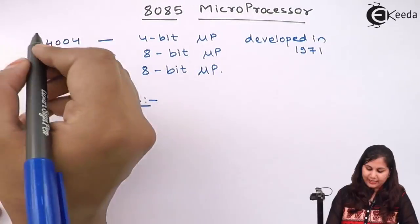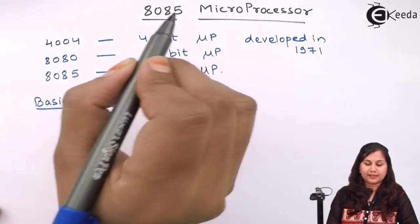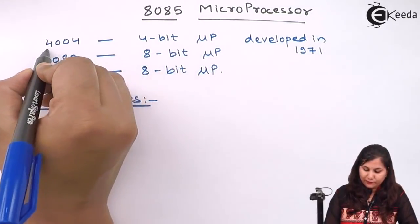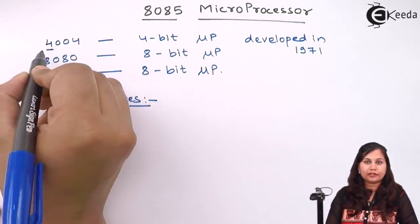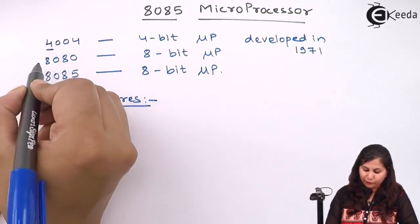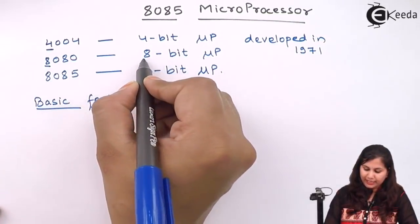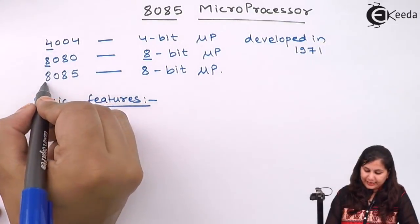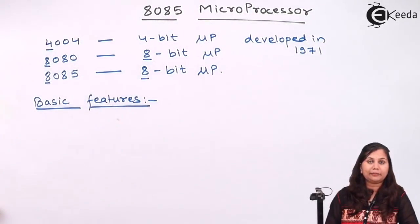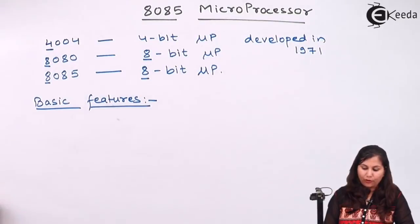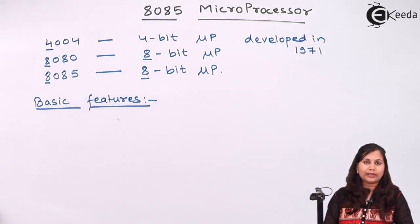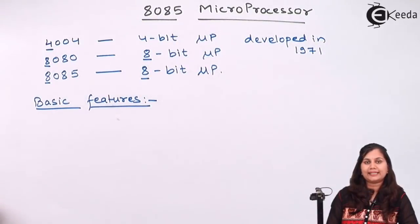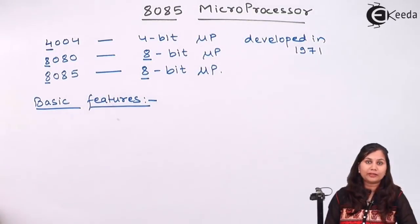As you can see, this 8 in 8085 is showing that it is an 8-bit microprocessor. So the first feature of the 8085 microprocessor is that it is an 8-bit general purpose microprocessor.